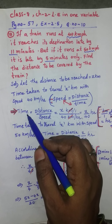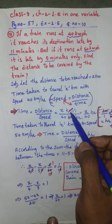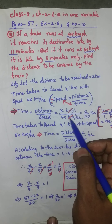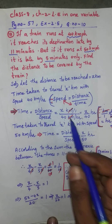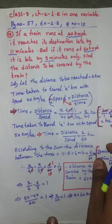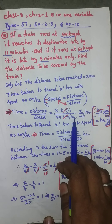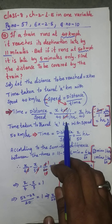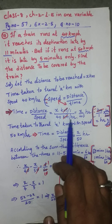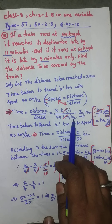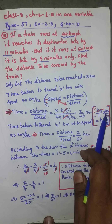Using the formula time = distance / speed, with distance x km and speed 40 km/h, the units work out as: kilometer divided by (kilometer per hour) = kilometer × (hour per kilometer) = hours. So time = x/40 hours.